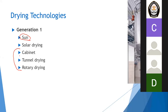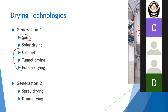Generation two is spray drying and drum drying. Spray drying produces products like milk powder and coffee powder. Drum drying is also another type of technology used in drying milk products. These were developed mostly in the early 20th century.